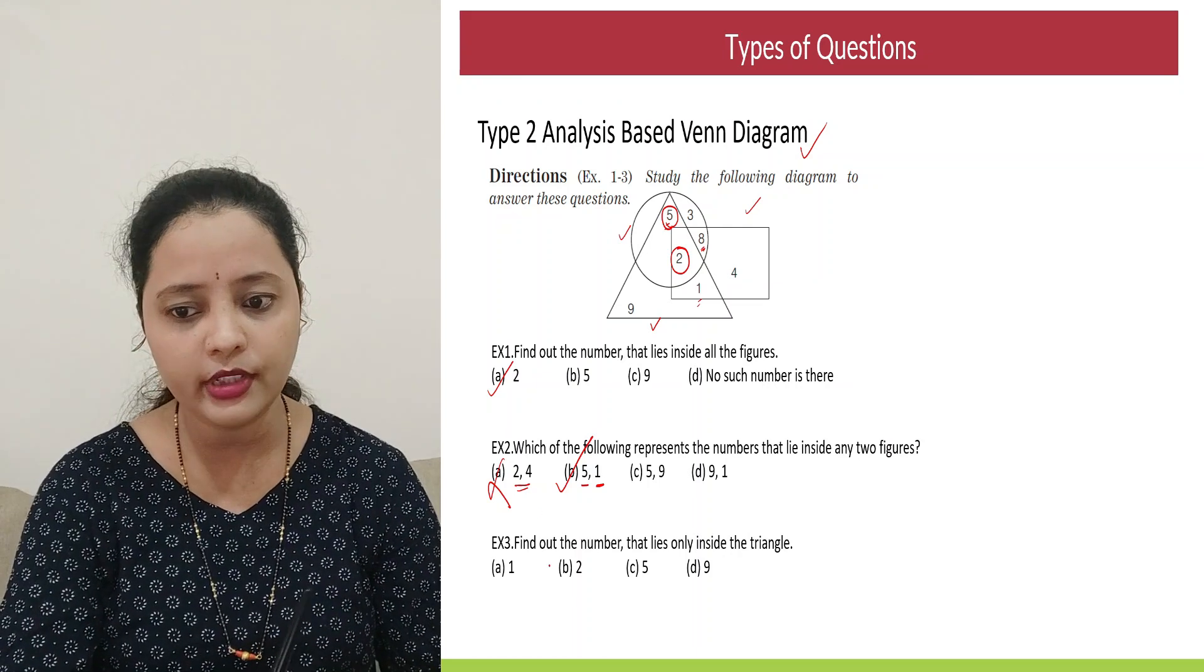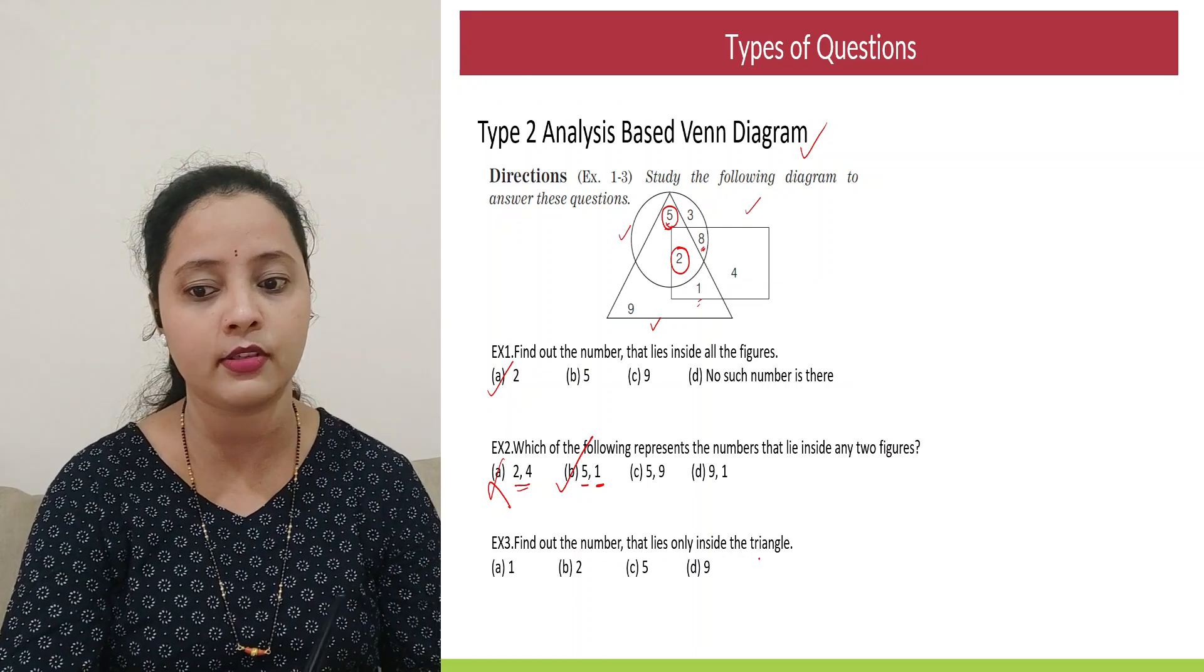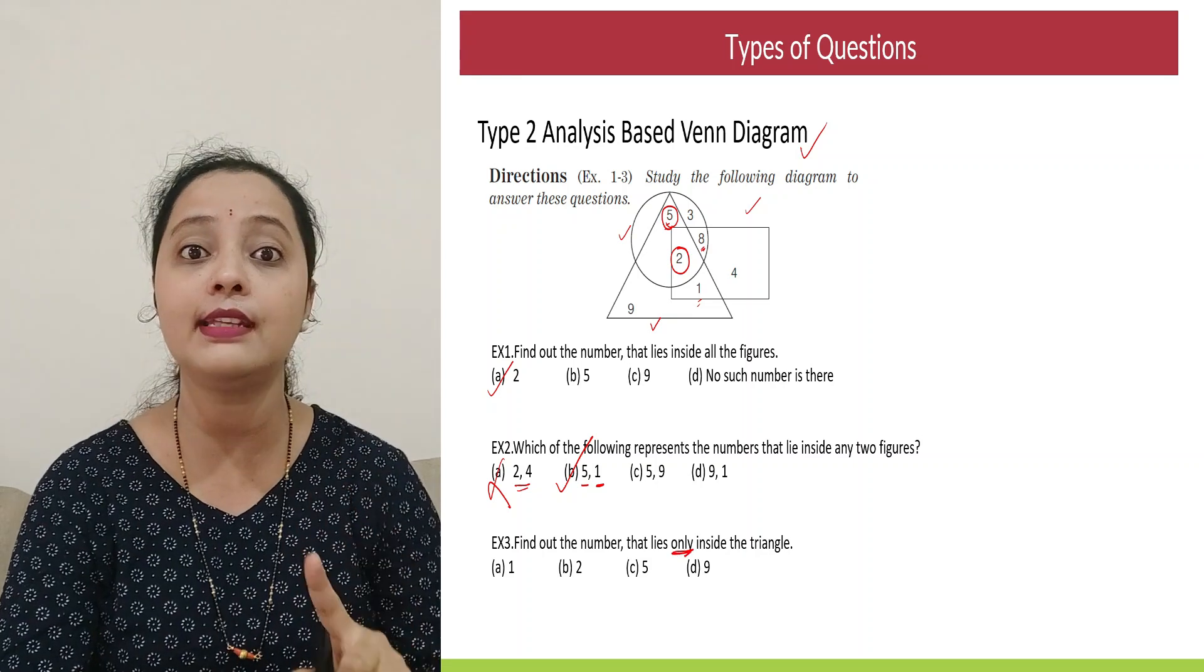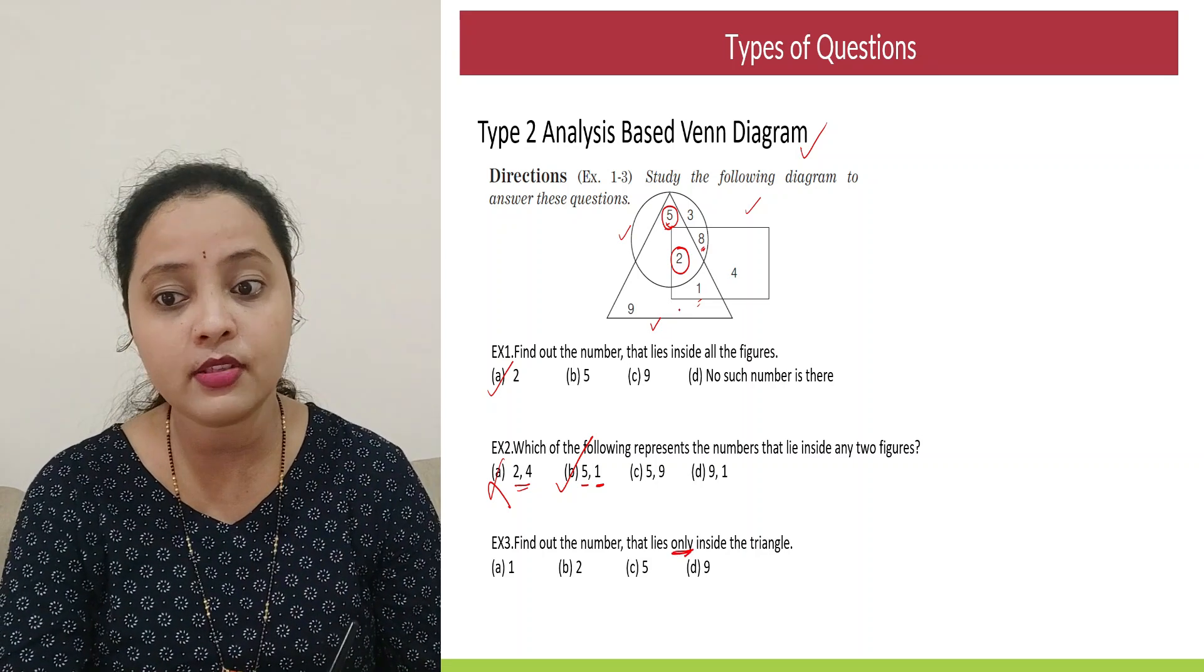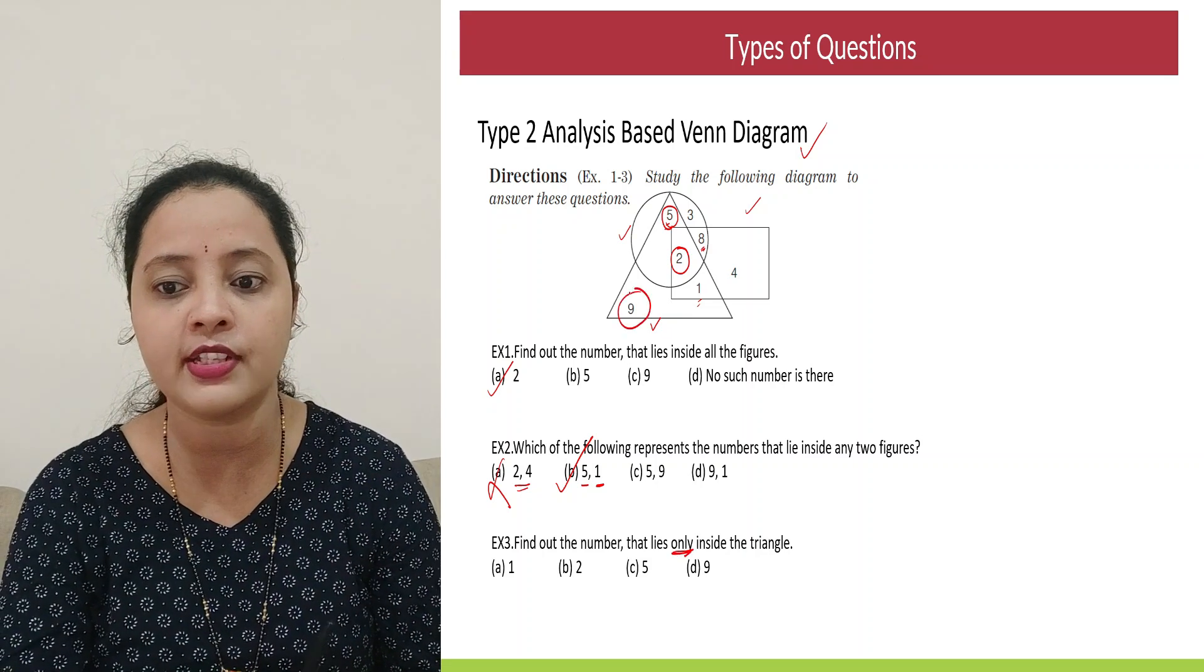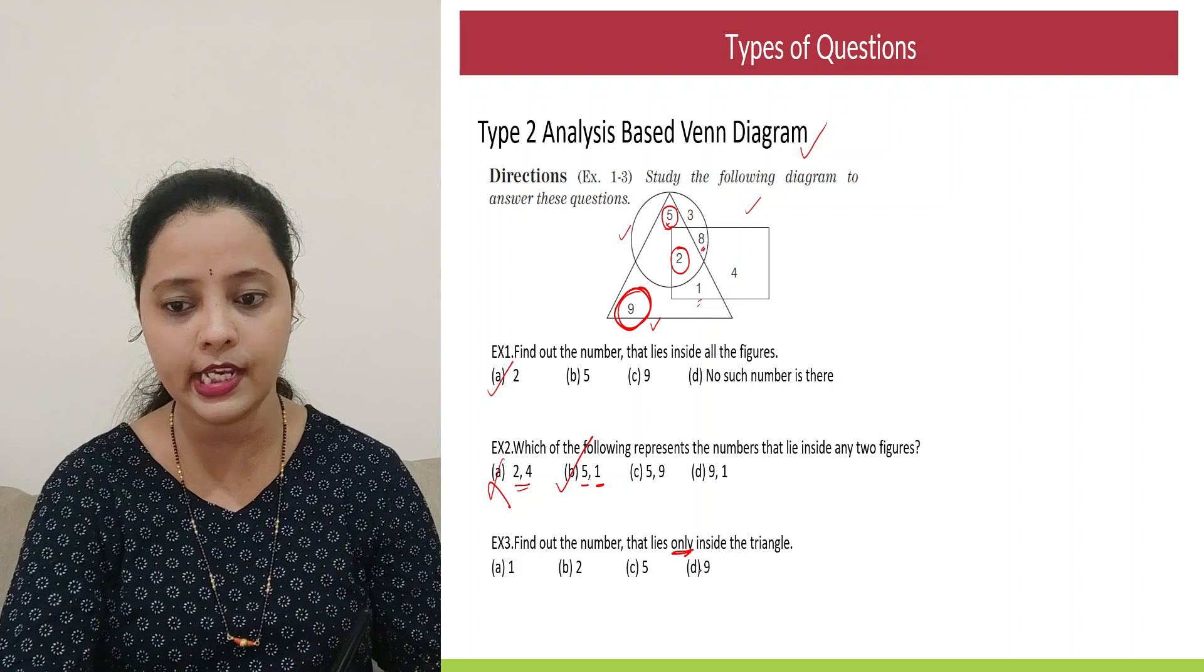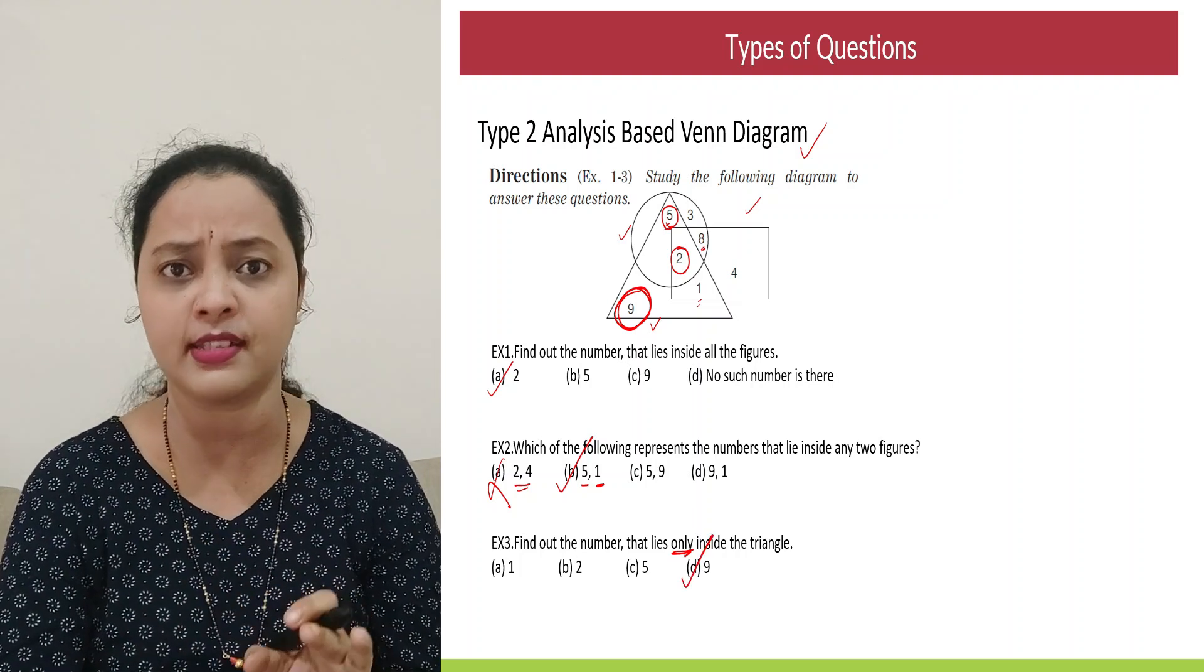Next. Find out the number that lies only inside the triangle. So the number that's only inside the triangle, I can obviously say it's option D. That is 9.